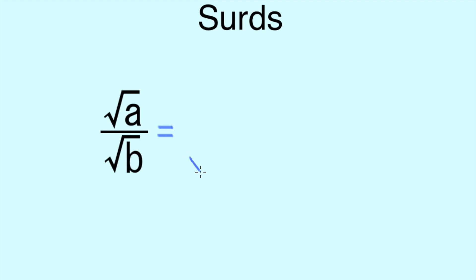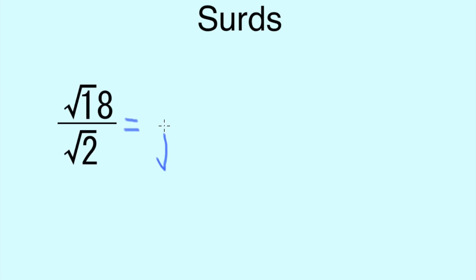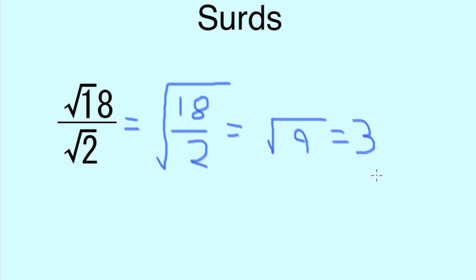Another important rule to remember is that √a over √b is the same as √(a/b). So to simplify √18 over √2, we make √(18/2), which makes √9, and since √9 is not a surd, the answer is exactly 3.